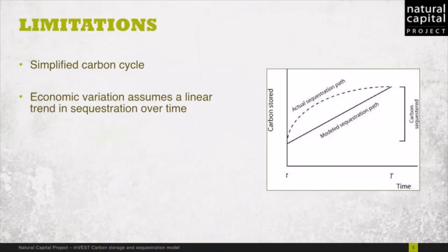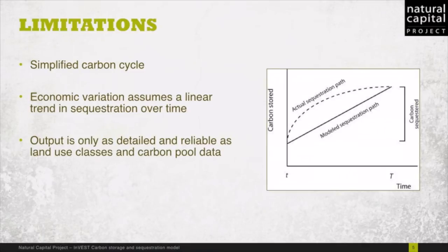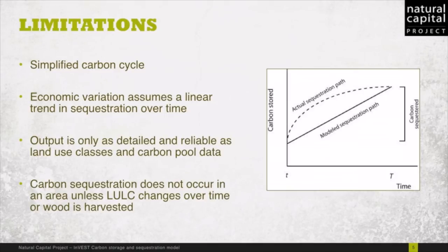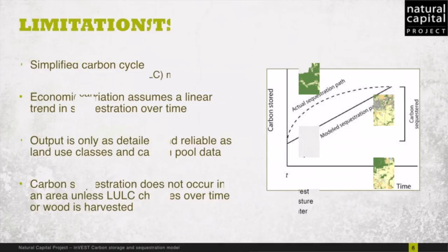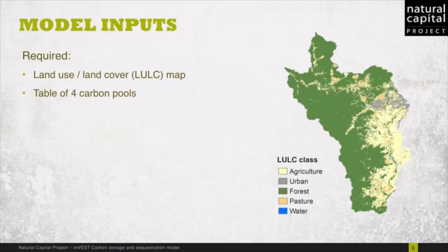The model output is only as accurate as the land cover and carbon pool data that is provided as inputs, so it is worthwhile to look for high-quality input data. Finally, carbon sequestration only occurs if a land cover changes over time or wood is harvested. Changes in storage because of plant growth are not directly modeled.